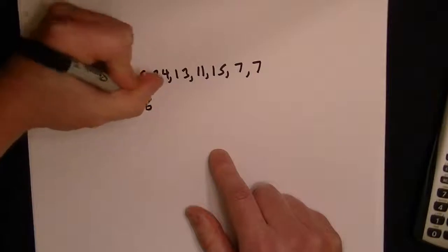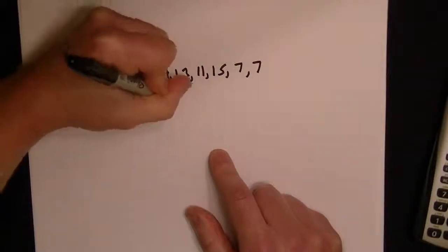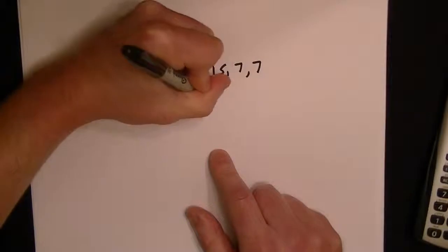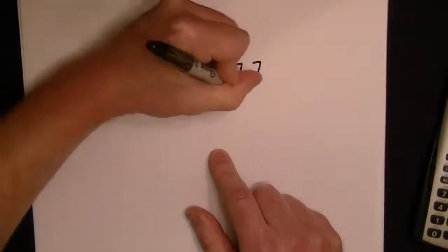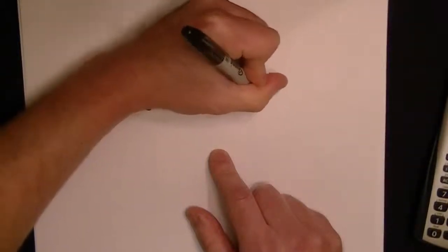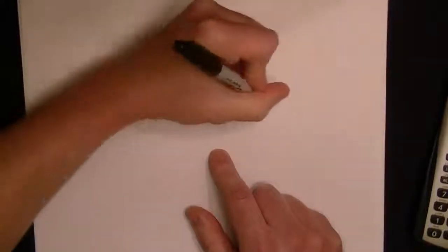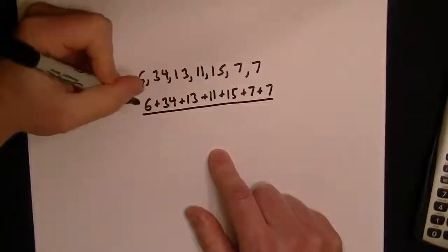First we do the summing part. We sum each of our numbers: 6 + 34 + 13 + 11 + 15 + 7 + 7. Then you have to divide what you've summed by the number of numbers.